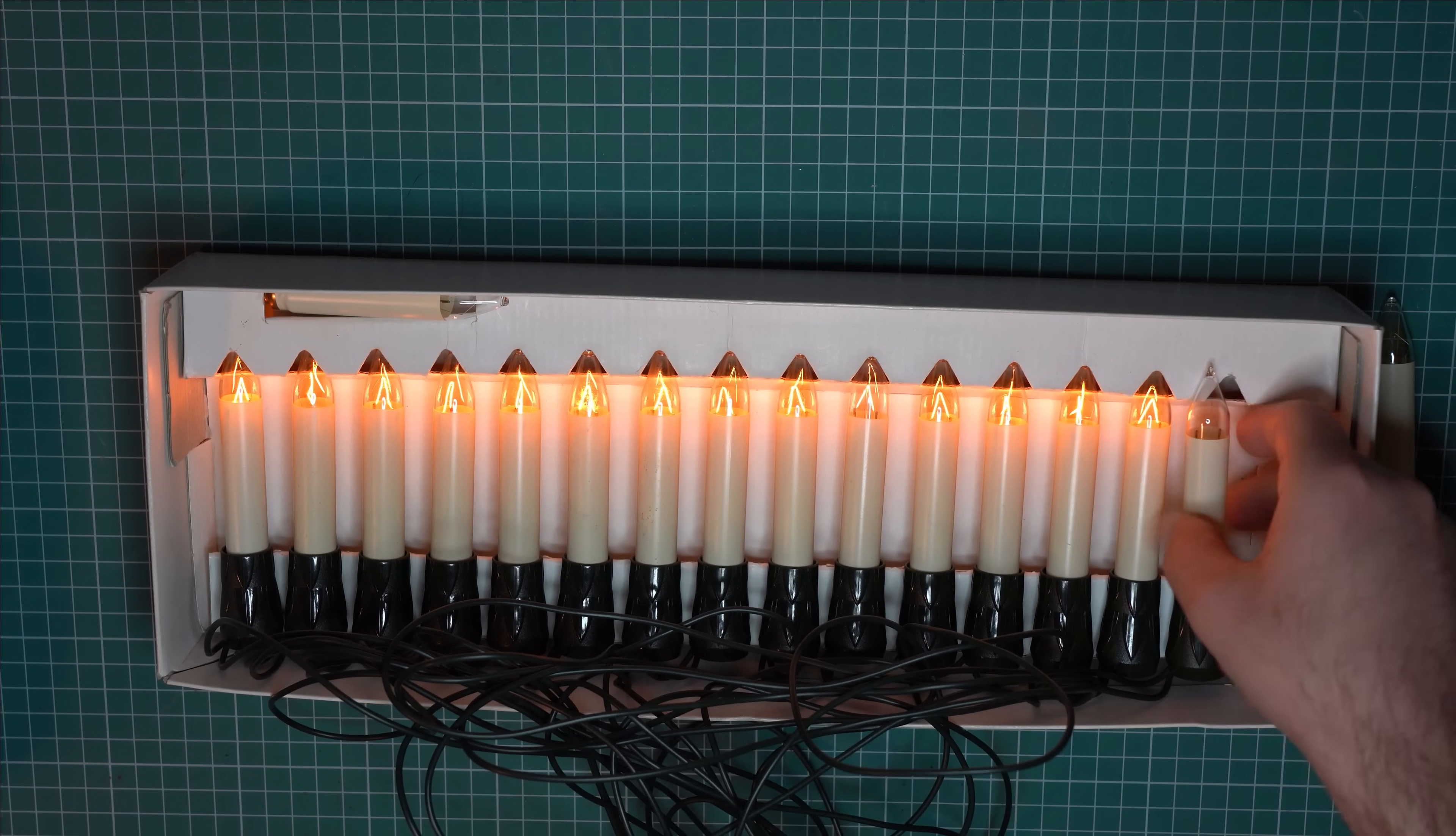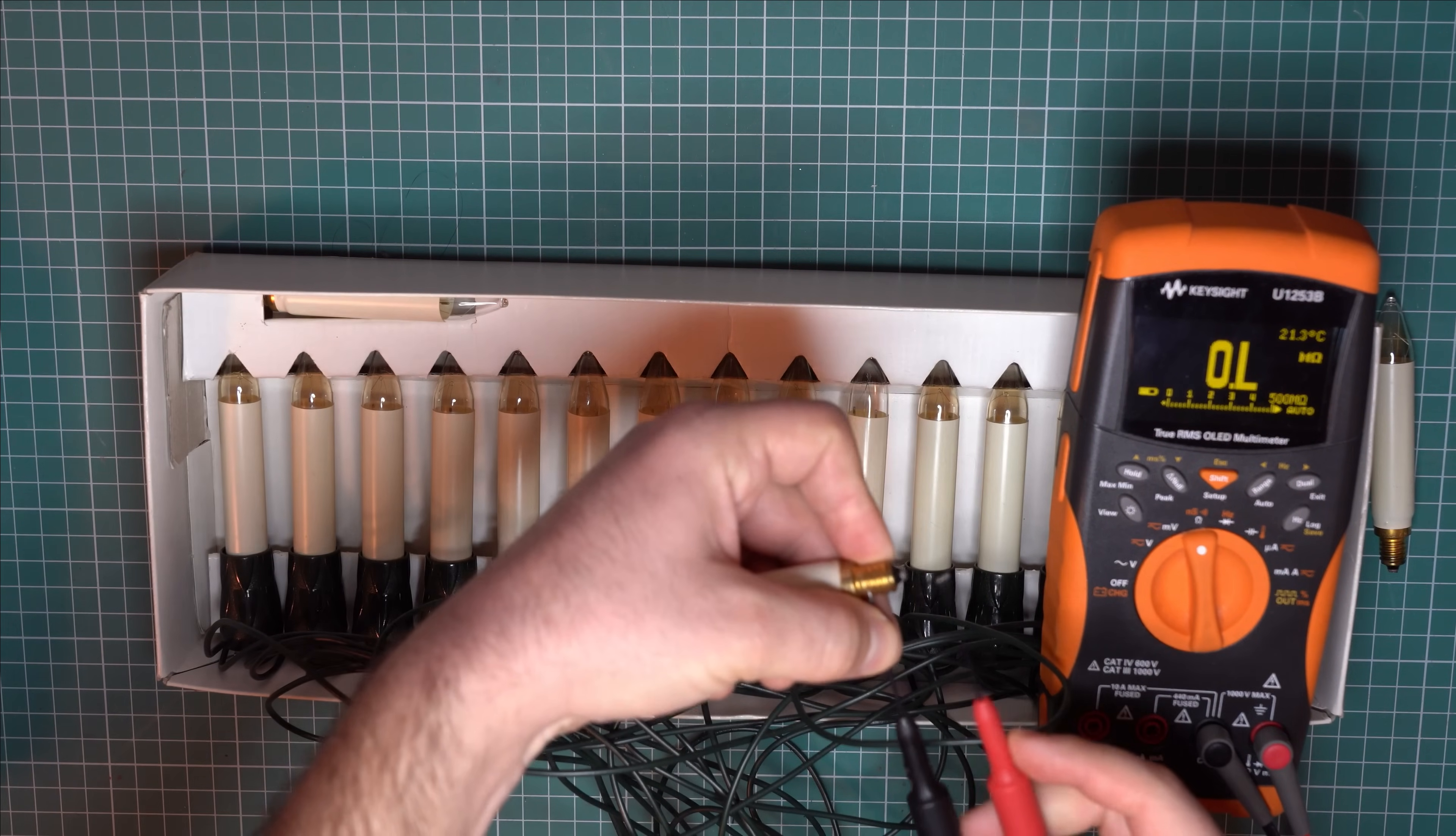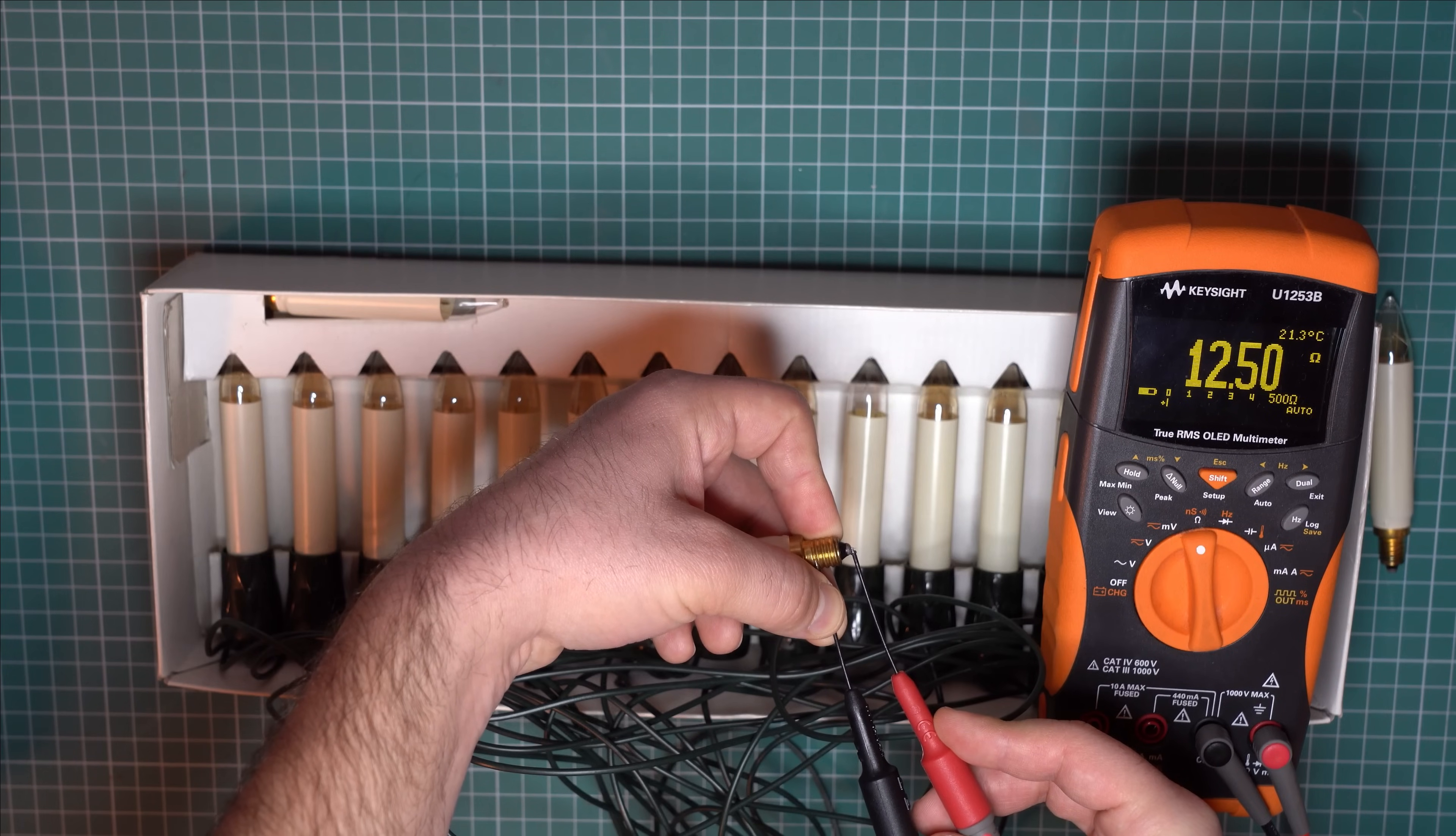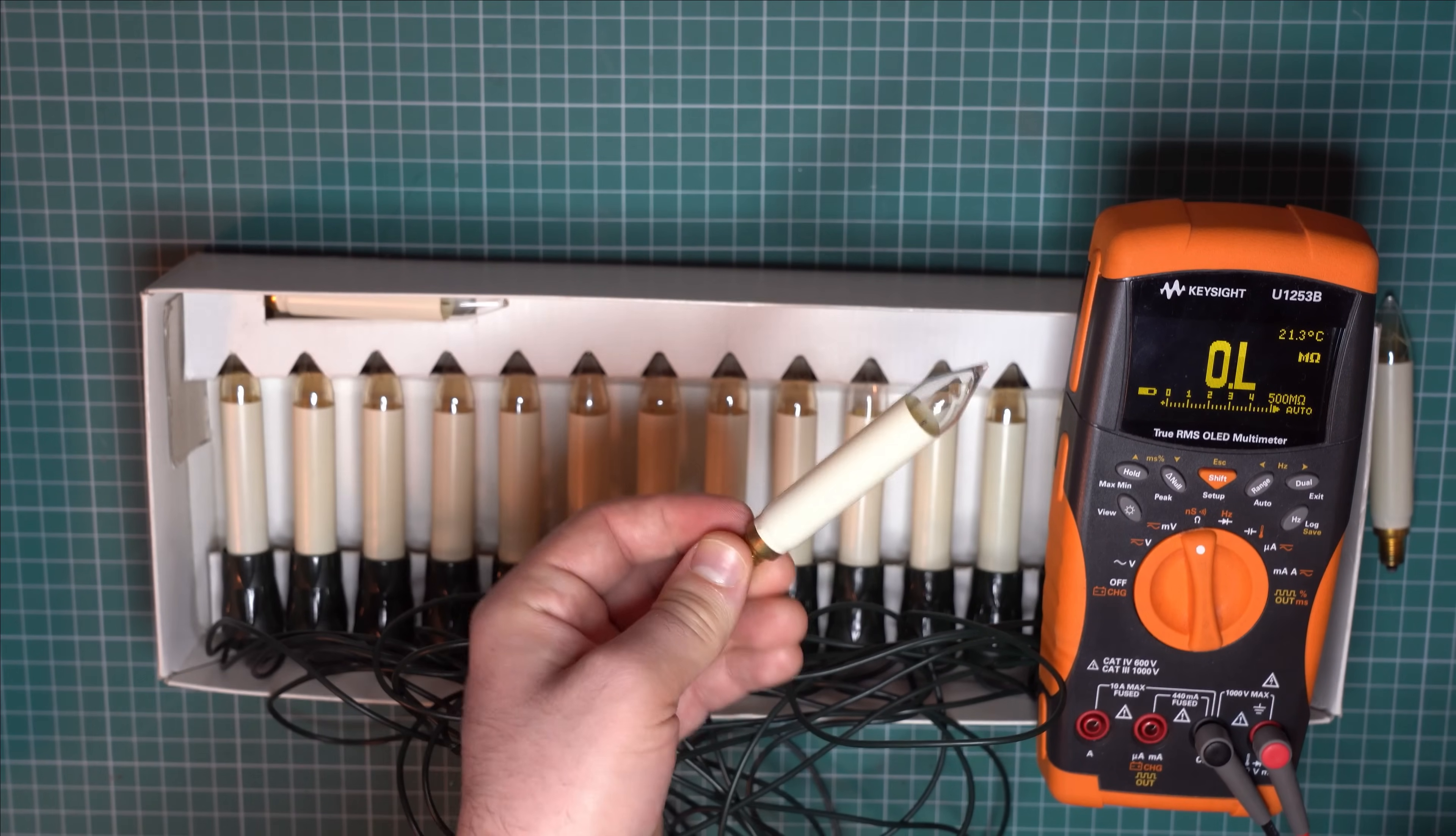So let's test it with a multimeter. Let's connect the multimeter to this light bulb and measure its resistance. Okay, so it's not really a dead short but the resistance is around 12 ohms. So there is something weird going on inside this light.